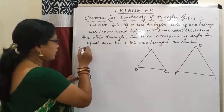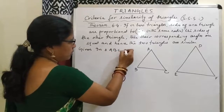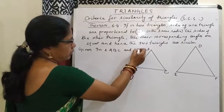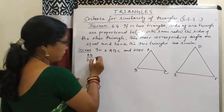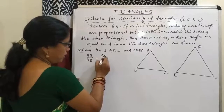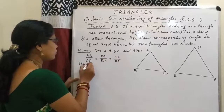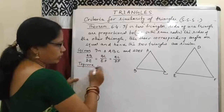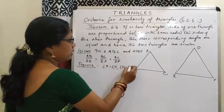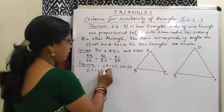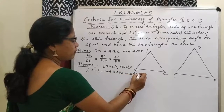It is given that in triangle ABC and triangle DEF: AB/DE = BC/EF = AC/DF. To prove: angle A equals angle D, angle B equals angle E, angle C equals angle F, and triangle ABC is similar to triangle DEF.